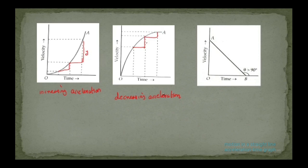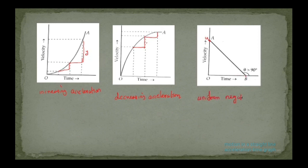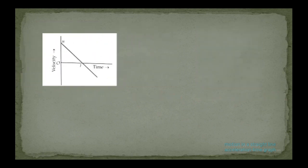The next graph shows line AB going downward. The body starts with an initial velocity u, and the velocity decreases uniformly with time, eventually becoming zero after a certain time. The slope is negative, so this graph represents uniform negative acceleration — the body is decelerating uniformly.